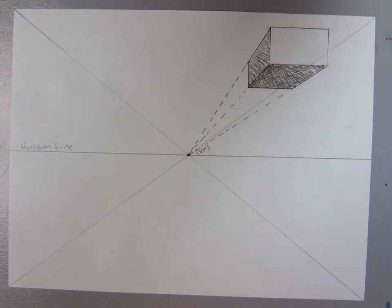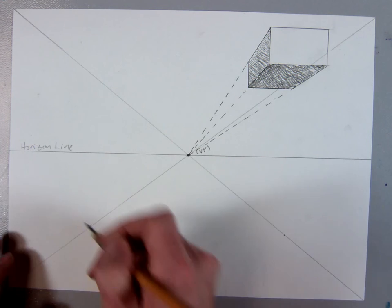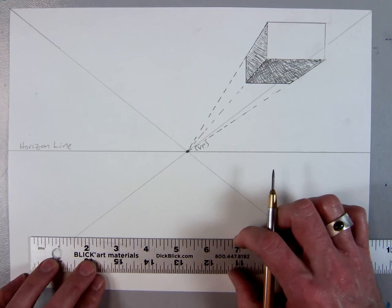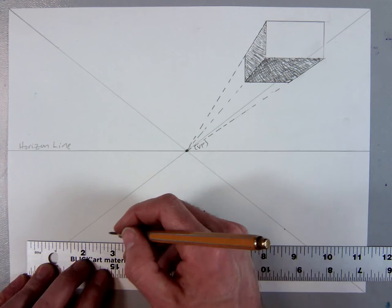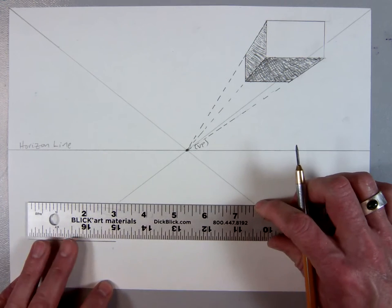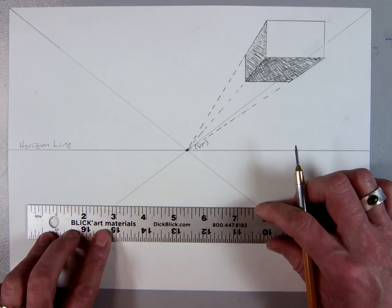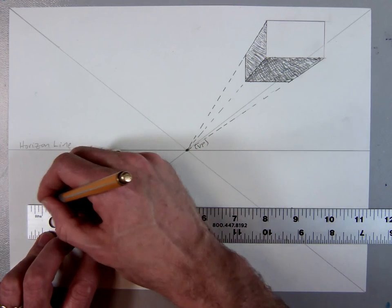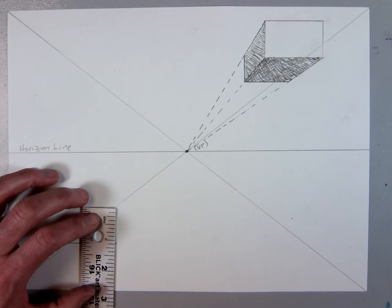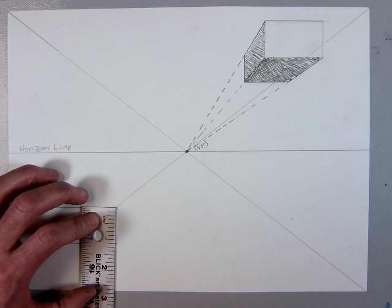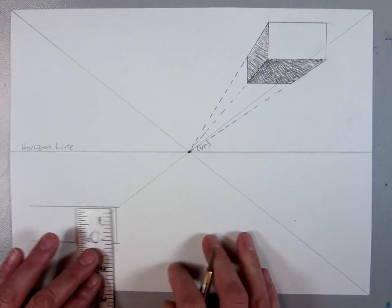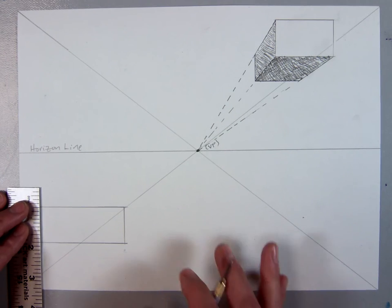Now we're going to do the same thing down here at the bottom. I'm just going to speed up since you've kind of got that process already. Here's my horizontal line that will be the bottom of my rectangular prism. Here's the top line of my rectangular prism. Here is the vertical right side of my rectangular prism. Vertical left side of my rectangular prism.